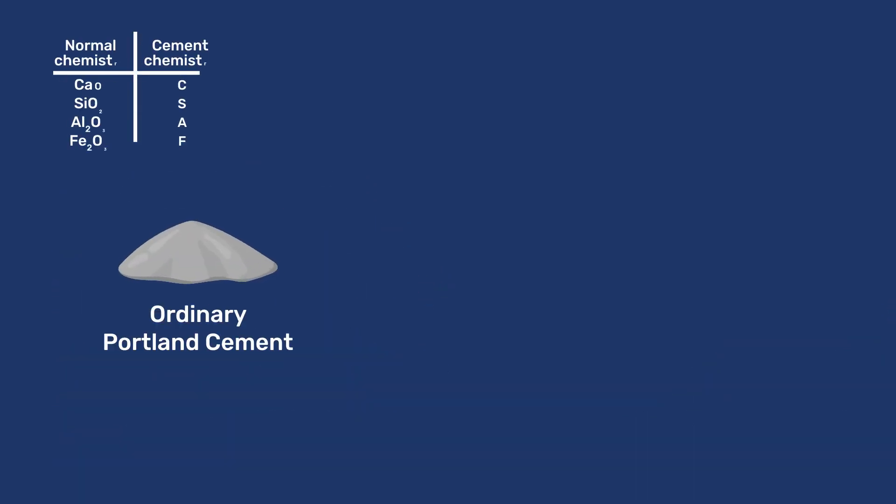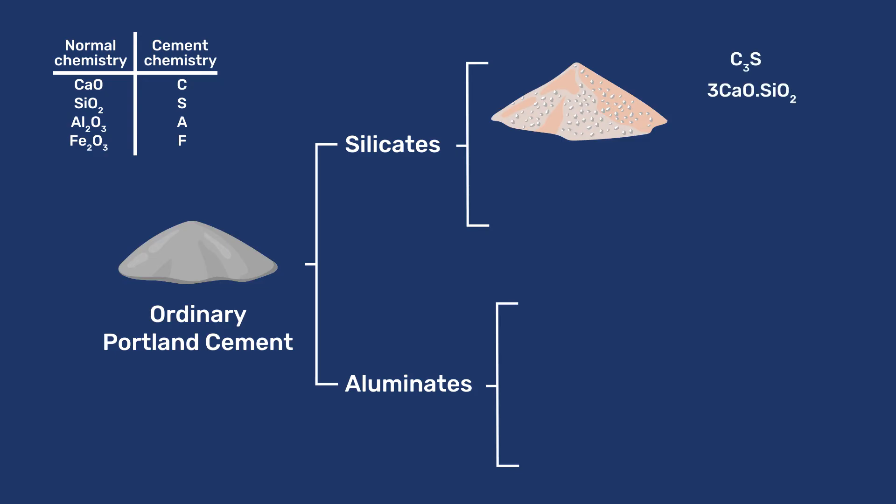Portland cement contains four phases. Two are silicates, and two are aluminates. We already mentioned the silicates C3S and C2S, which we saw are also called alite and belite, referring to their impure forms found in industrial cements.